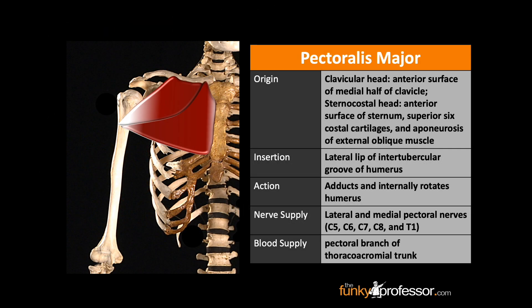The pectoralis major has two heads: the clavicular head and the sternocostal head. The clavicular head arises from the anterior surface of the medial half of the clavicle. The sternocostal head arises from the anterior surface of the sternum, the superior six costal cartilages, and the aponeurosis of the external oblique muscle.